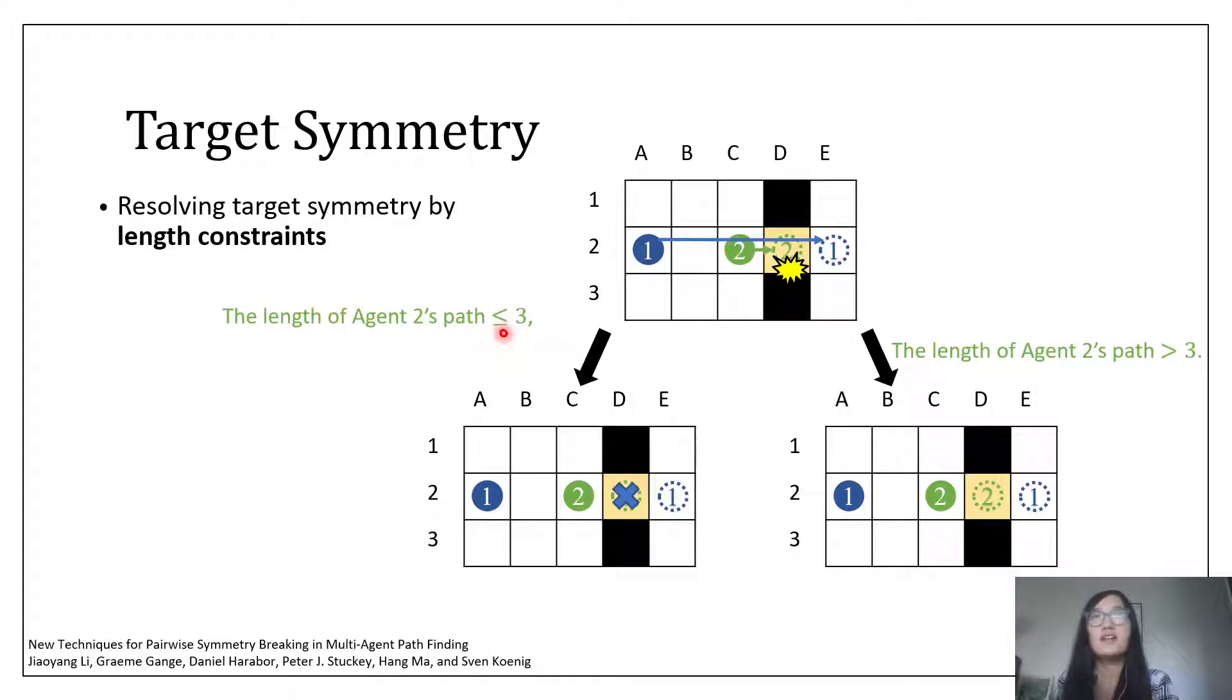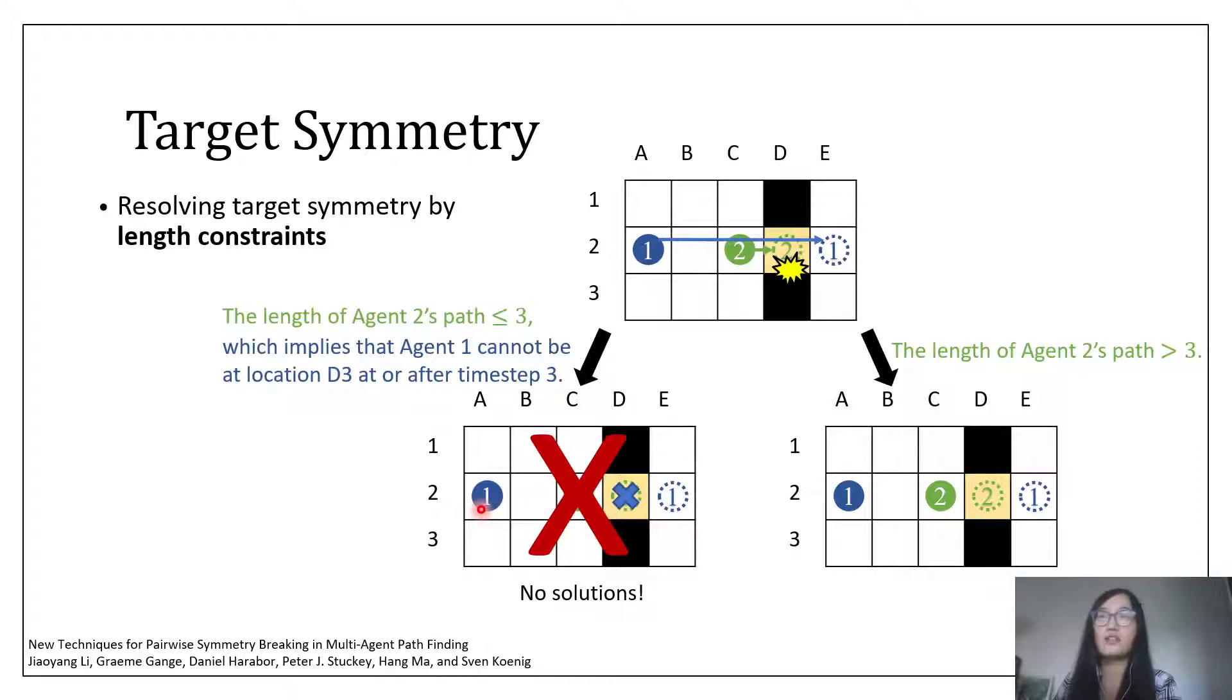In the first case, if the path length of agent 2 is no larger than 3, then agent 2 has to stay at its goal location at and after time step 3, which implies that agent 1 cannot be at this location at and after time step 3. So we have this constraint for agent 1 blocking this location starting from time step 3. We can realize that in this case, there's no path for agent 1 to reach its goal location, so we can prune this node.